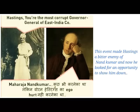Because of this instance — Raja Nandkumar leveling charges against him — a very bitter feeling was created inside Warren Hastings against Nandkumar. This event made Hastings a bitter enemy of Nandkumar, and now he looked for an opportunity to expose Nandkumar and prove him wrong somehow.